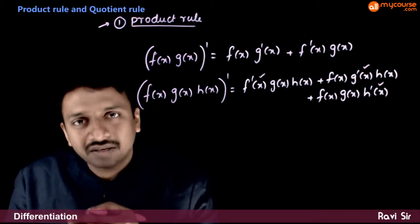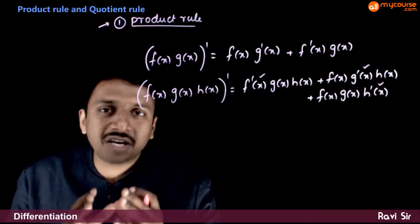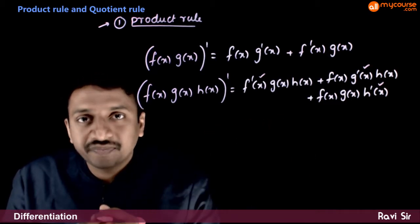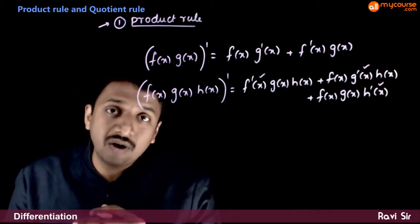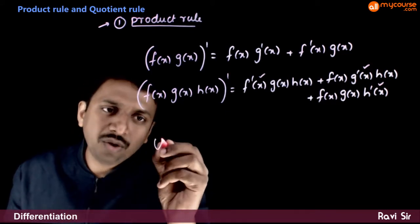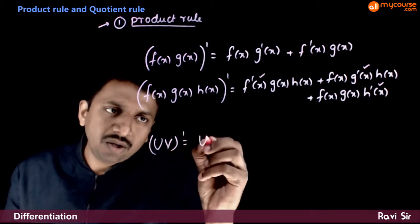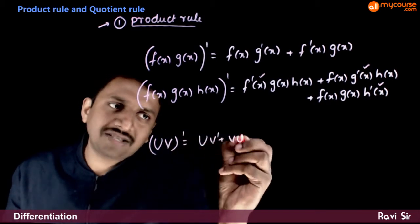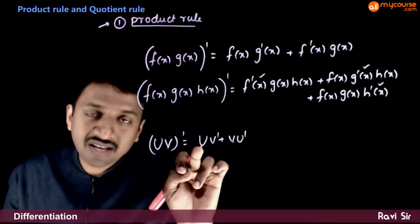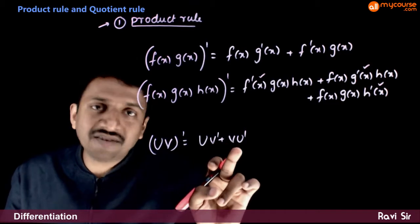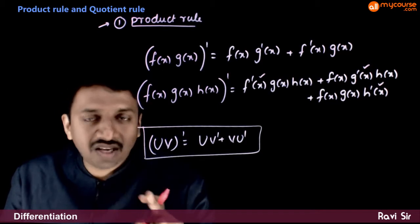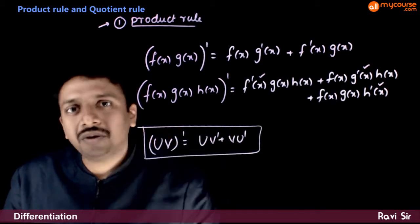Even if you have four different functions, you differentiate one function at a time leaving the other functions constant and add all the possible terms. This rule can be remembered easily as: (uv)' = u·v' + v·u'. The differentiation of a product of two functions is the first function times the differentiation of the second, plus the second function times the differentiation of the first.